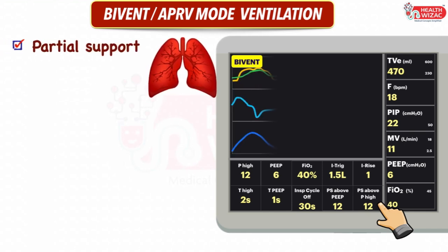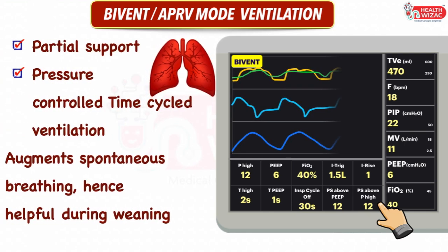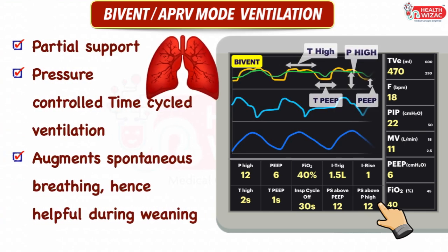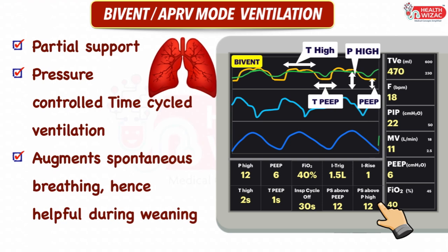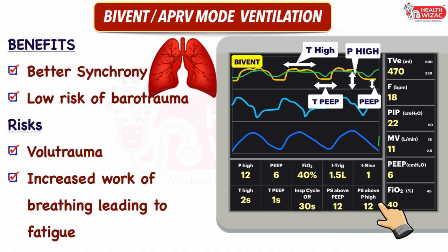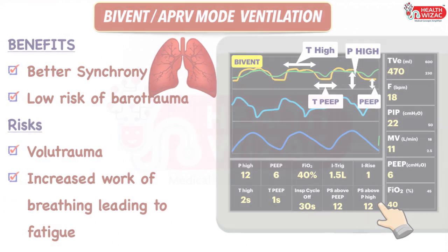Bi-Vent is a partial support mode that delivers pressure control time-cycled ventilation and also augments the patient's spontaneous breathing. Benefits include better synchrony with the patient and low risk of barotrauma, whereas risks include chances of volume trauma and increased work of breathing leading to fatigue.